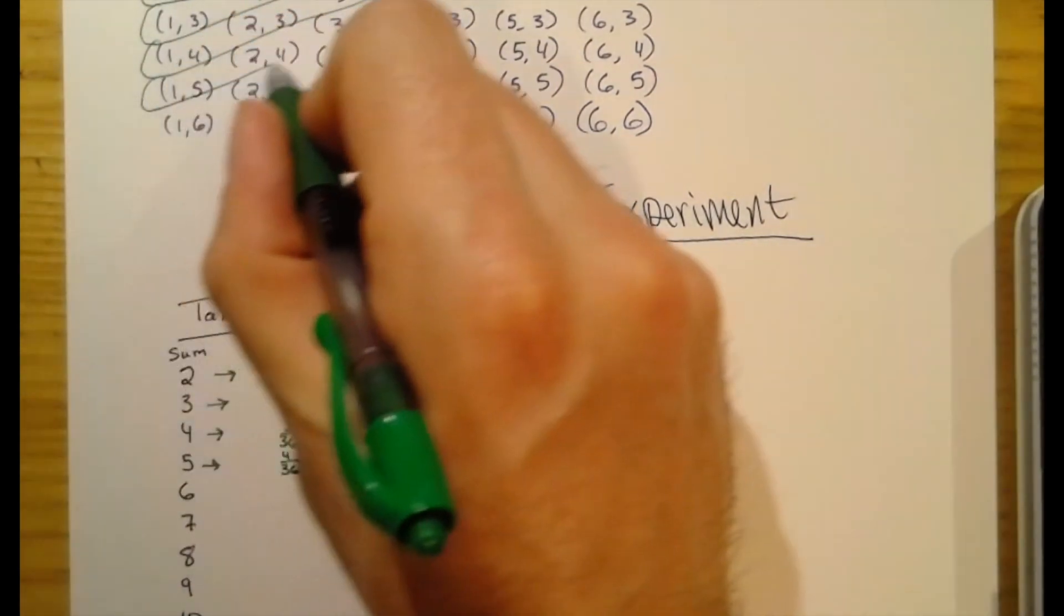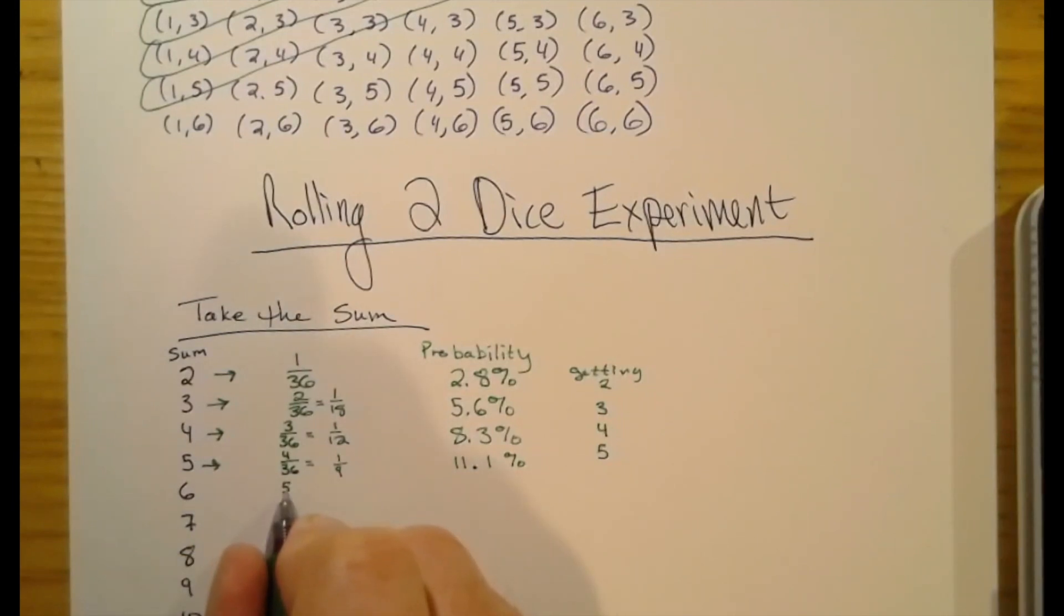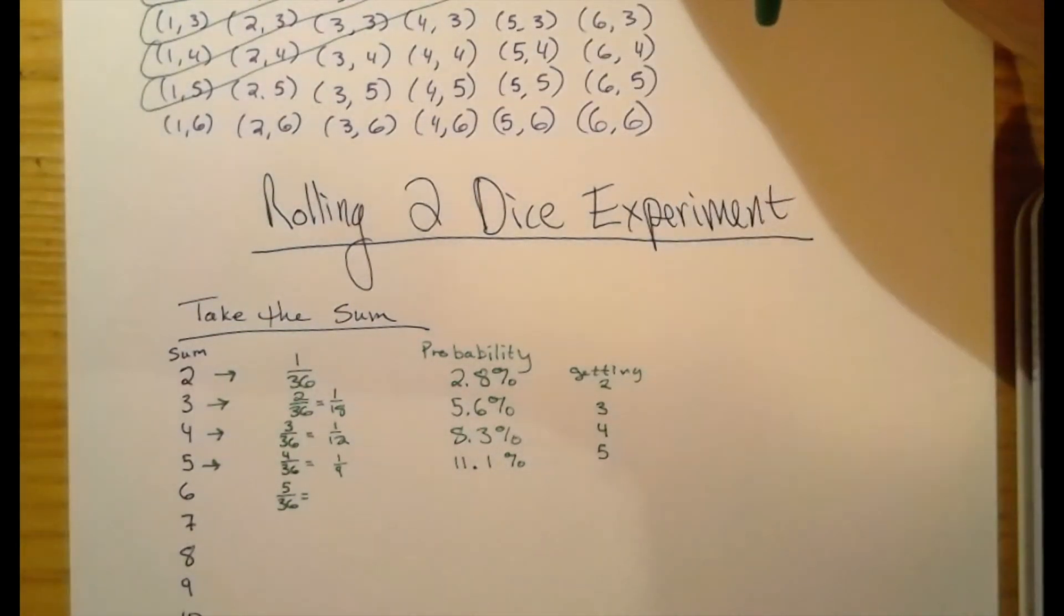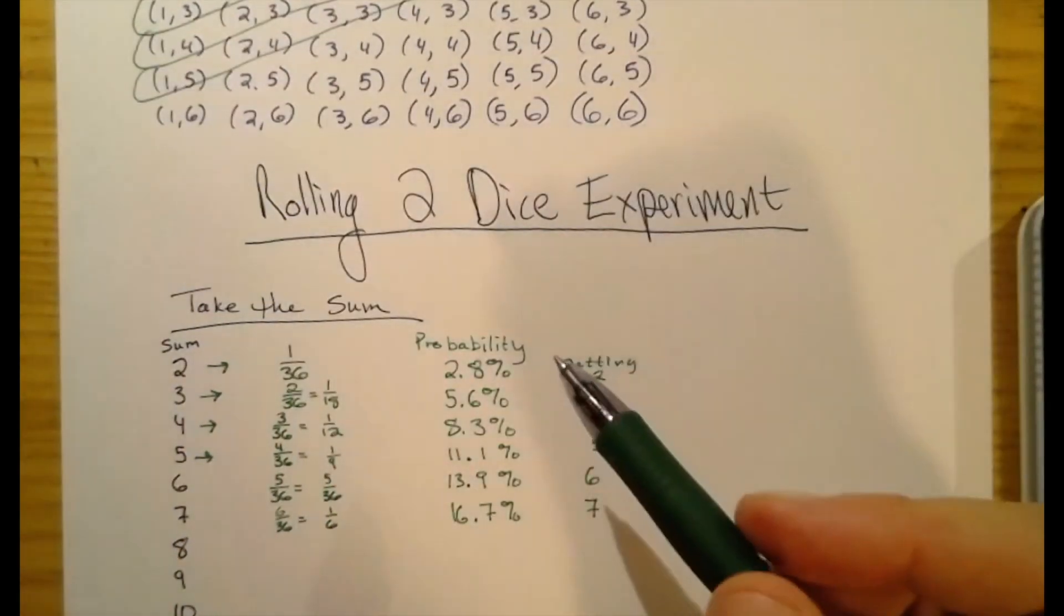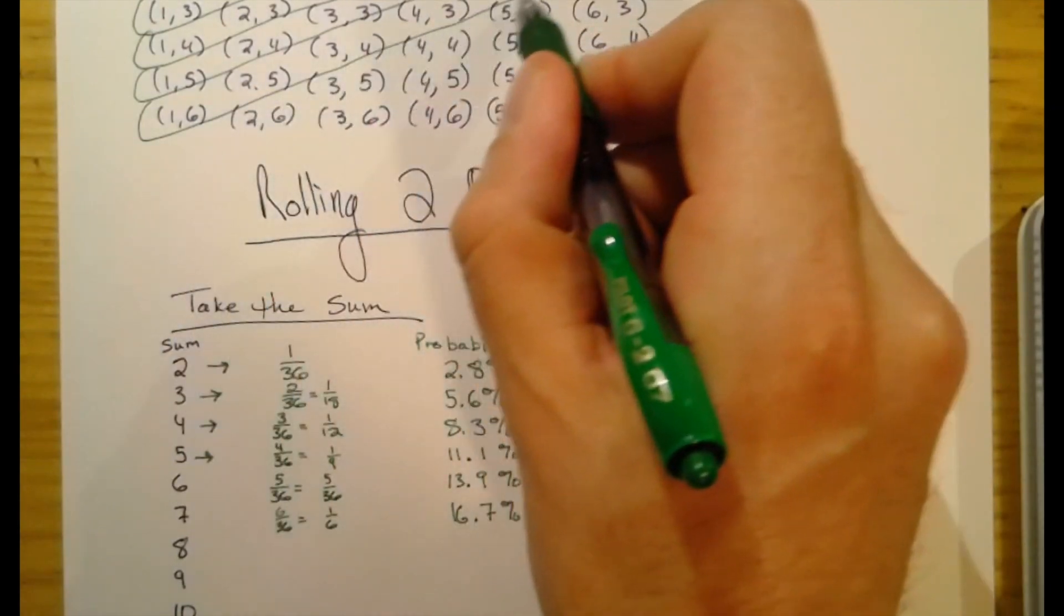For 6, we actually have 5 outcomes there. I'm going to come back to this. Sorry about that. I felt the dog ran away. She didn't. Sweet deal.